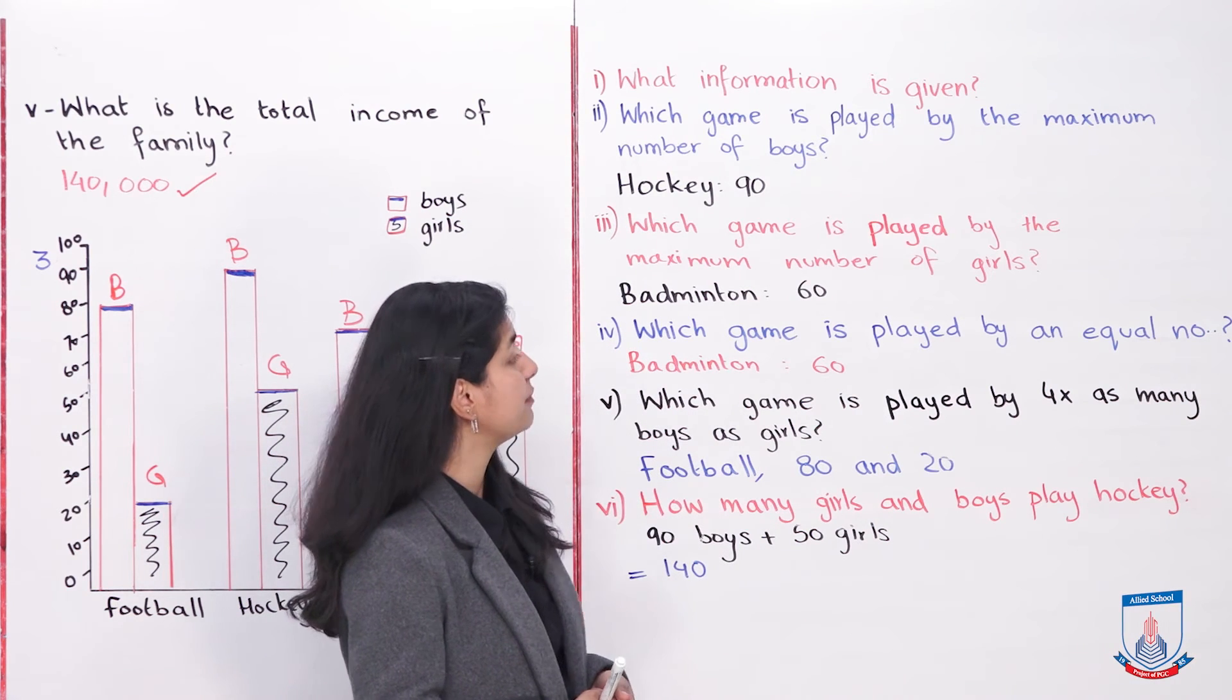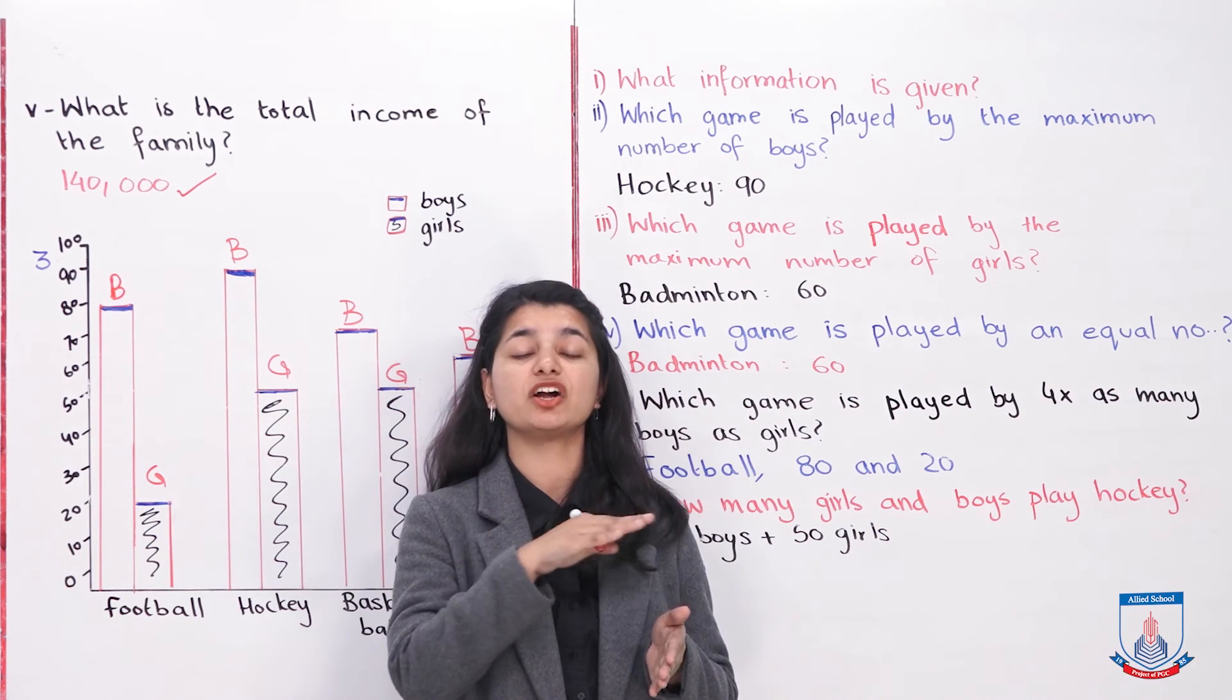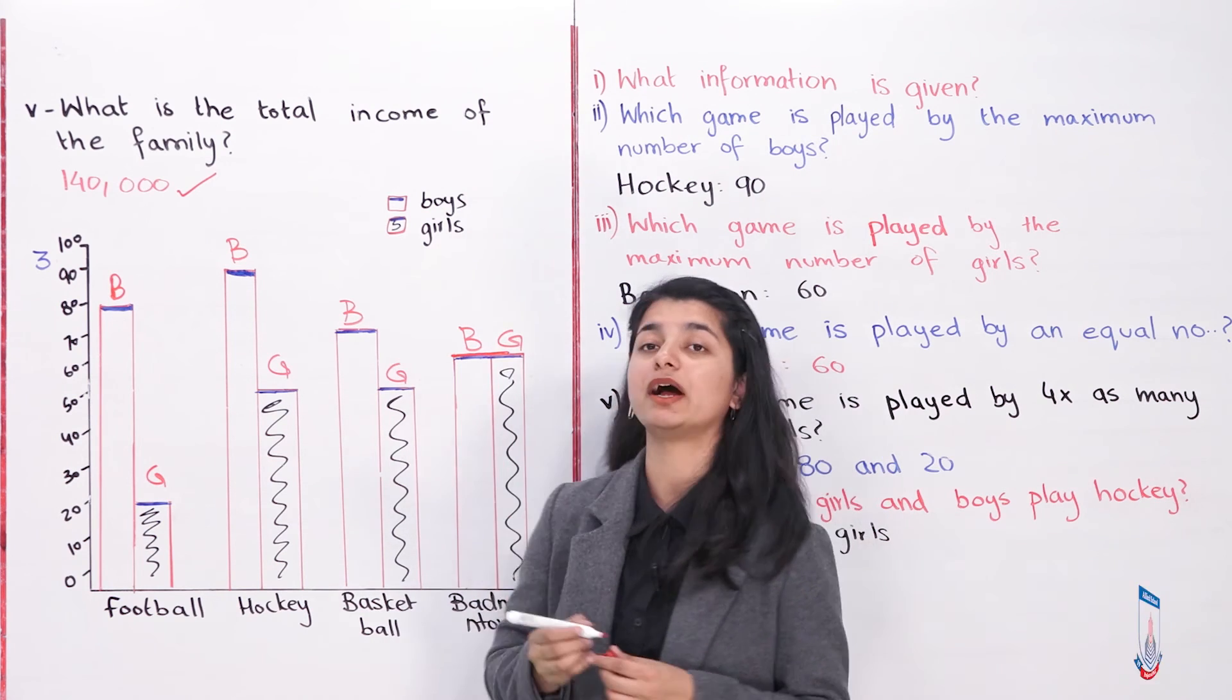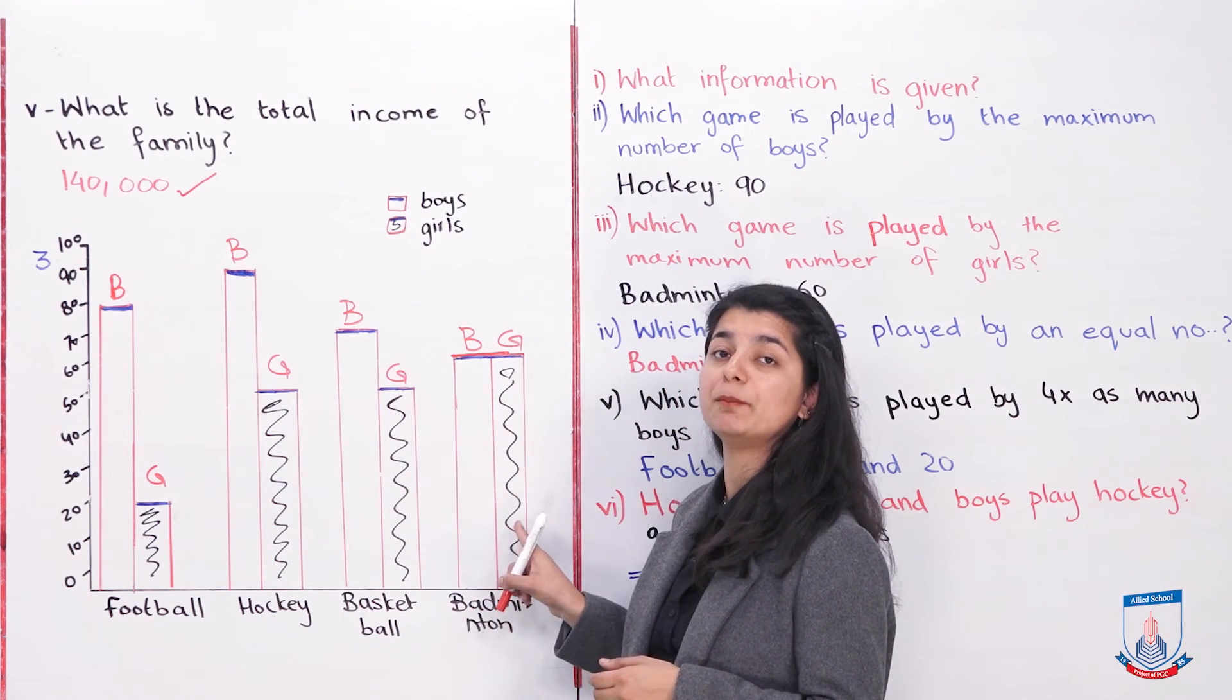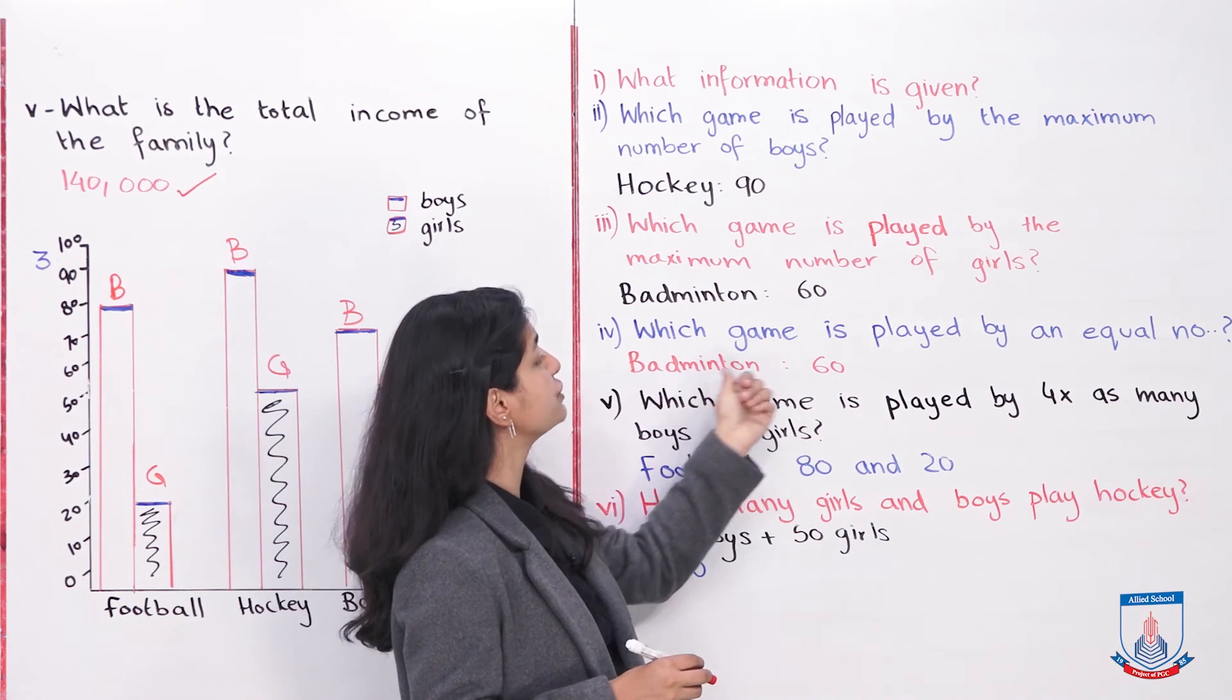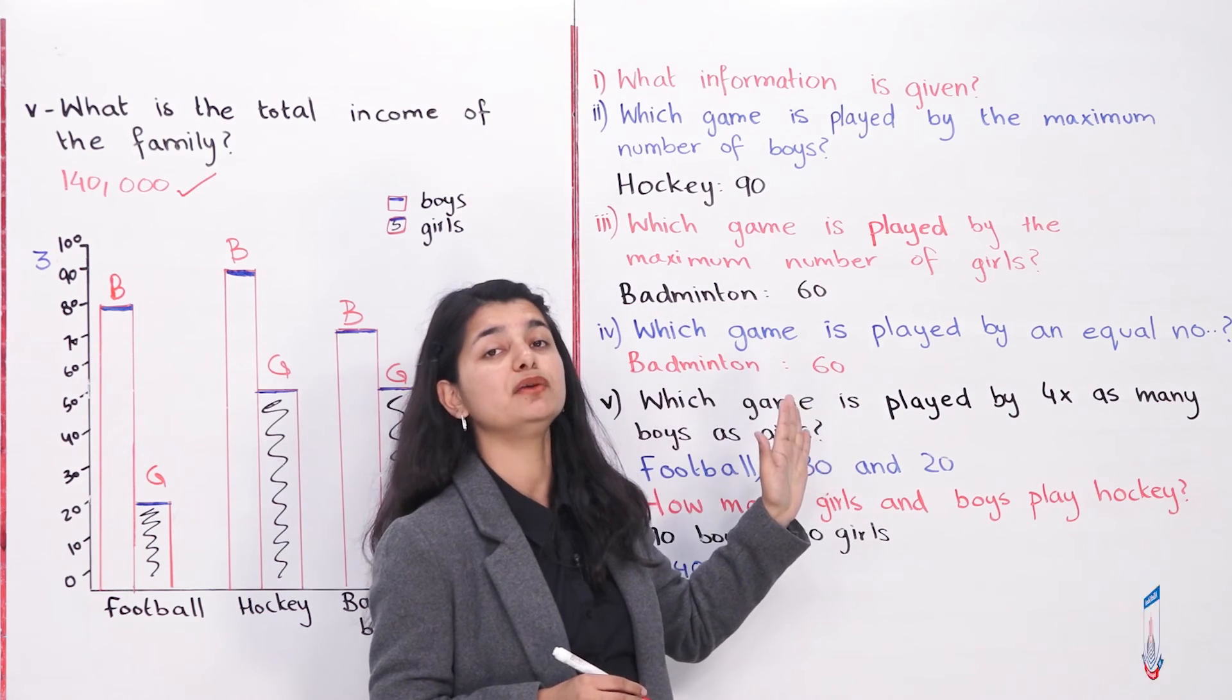Which game is played by an equal number of boys and girls? Where both boys' and girls' bars are exactly equal. If you look at this one right here, boys and girls' bars are exactly together. That means this is for badminton. So badminton has equal numbers, which is 60.